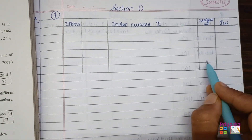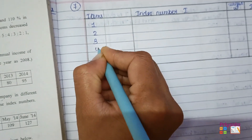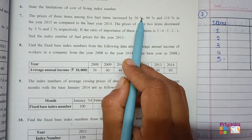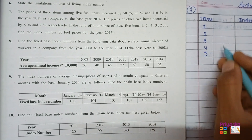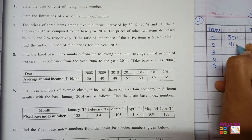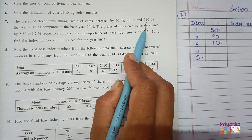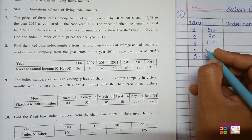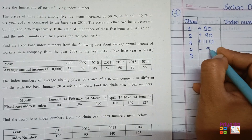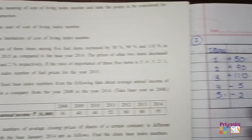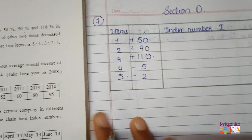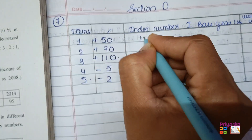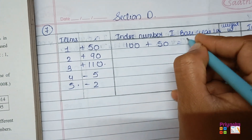For the index number, the weight is given, so we use the weighted index formula. Let's put the five items. Three items have been increased by 50%, 90%, and 110% in 2015 compared to base year 2014, and two items decreased by 5% and 2%. The percentage is calculated with respect to the base year. We always take the base year as 100.